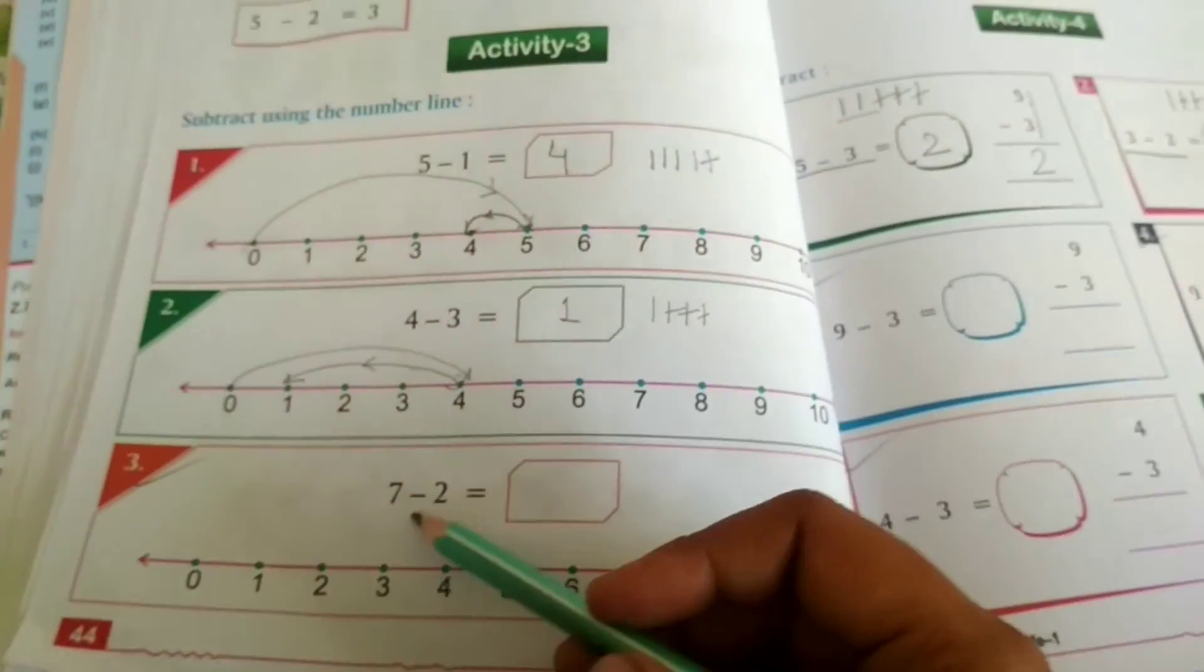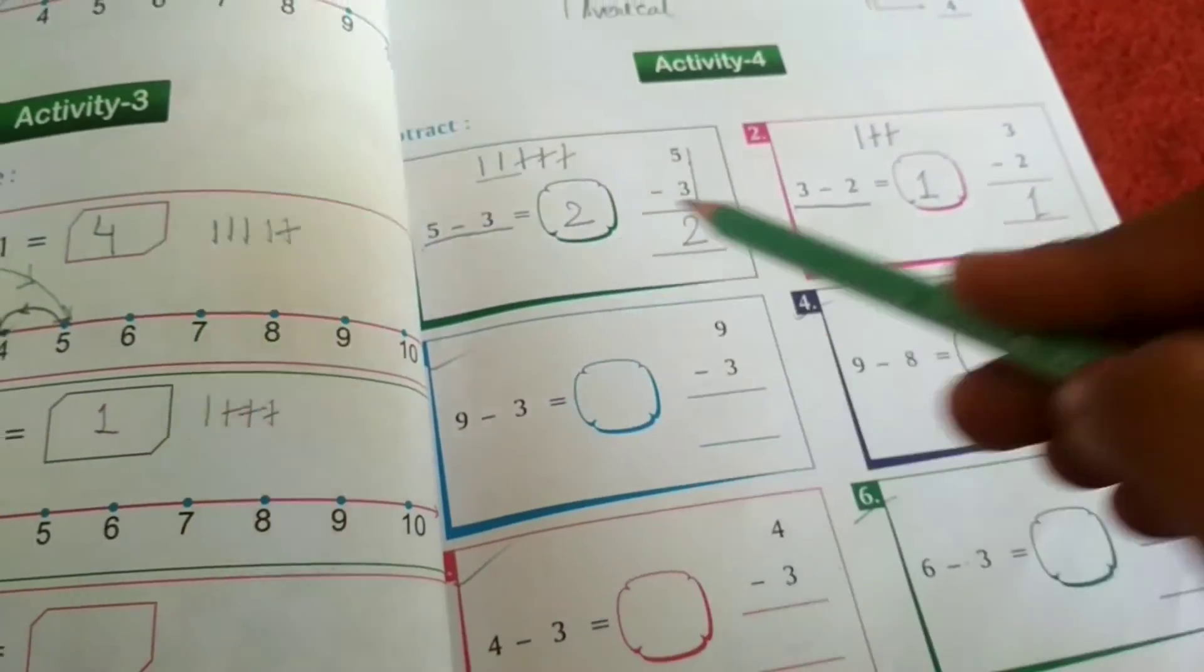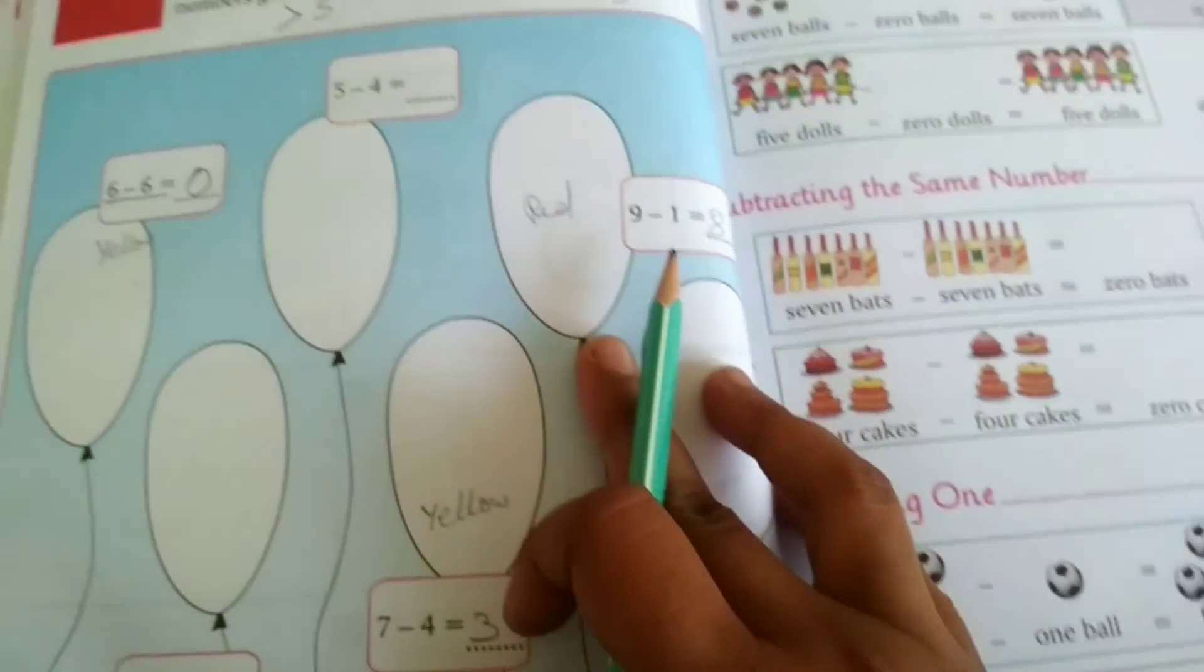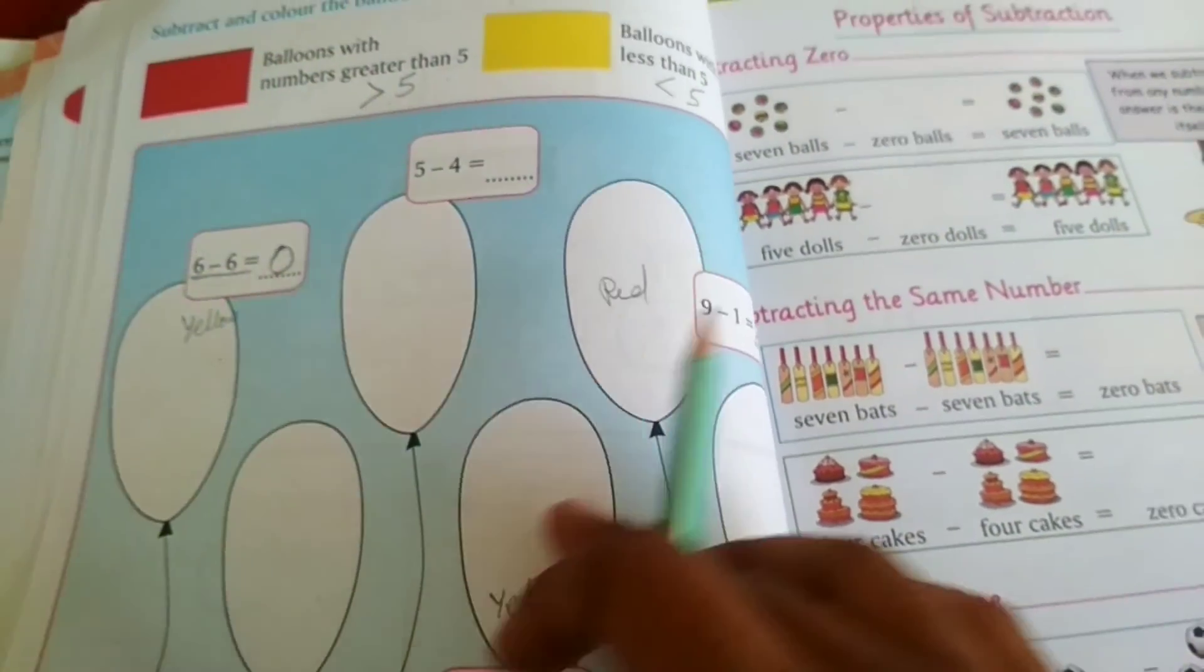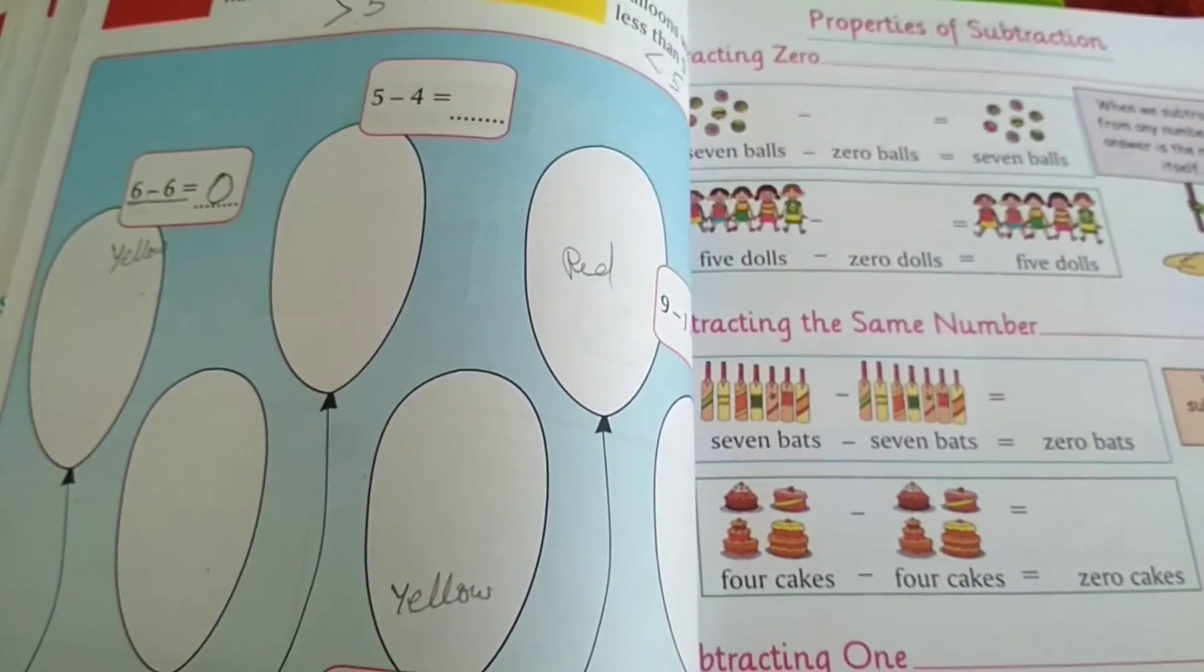This is your homework. Activity number 3, question number 3, activity number 4, 3, 4, 5, 6, as well as activity number 5 coloring. The next property of subtraction we will do in our next class. Thank you everyone.